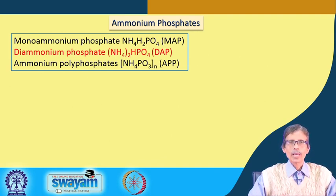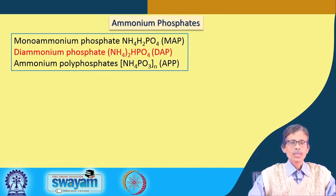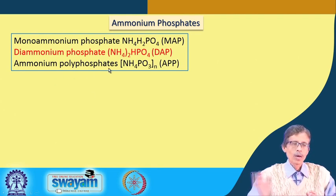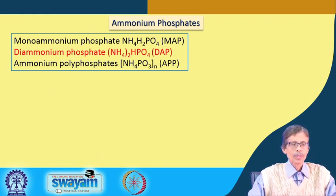Similarly, replacement of 2 protons gives diammonium phosphate, or DAP, which is very well known as the common source of both nitrogen and phosphorus as plant micronutrients. Then we can go for ammonium polyphosphates where you have a 1:1 ammonium-to-phosphate ion ratio, written as ammonium PO3 in polymeric chain form with the whole-N formula, known as APP.